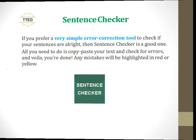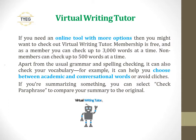Virtual Writing Tutor. If you need an online tool with more options, then you might want to check out Virtual Writing Tutor. Membership is free, and as a member you can check up to 3,000 words at a time. Non-members can check up to 500 words at a time. Apart from the usual grammar and spelling checking, it can also check your vocabulary — for example, it can help you choose between academic and conversational words or avoid clichés. If you're summarizing something, you can select 'Check Paraphrase' to compare your summary to the original.